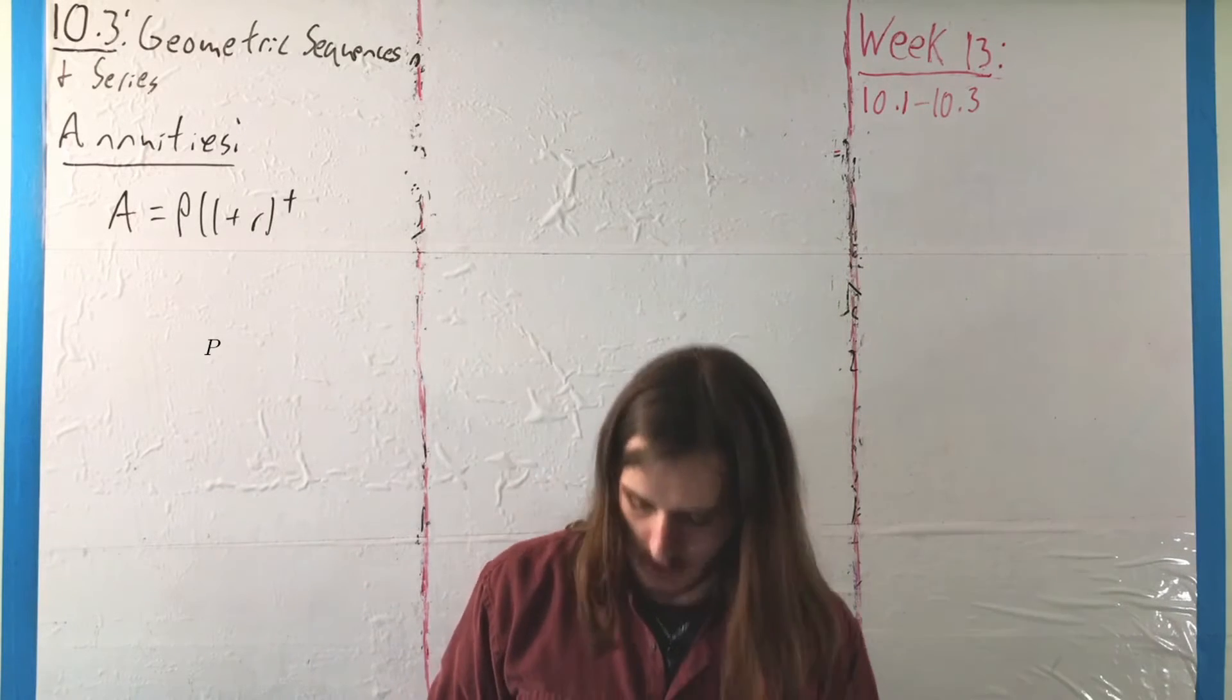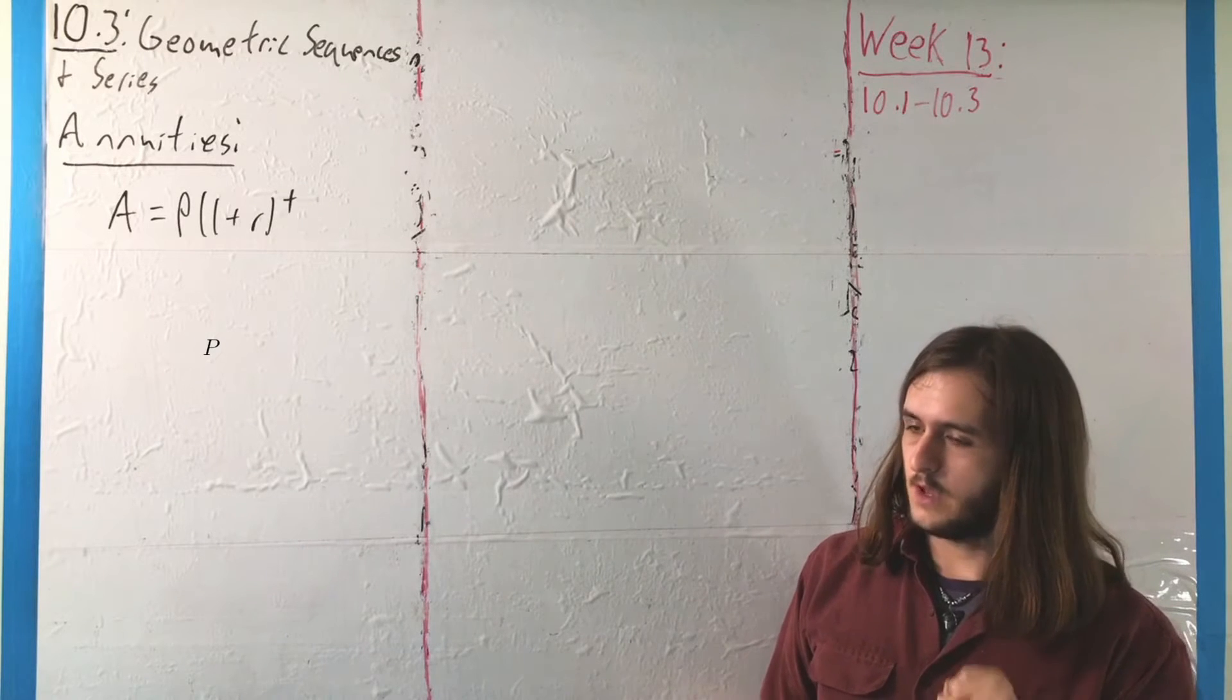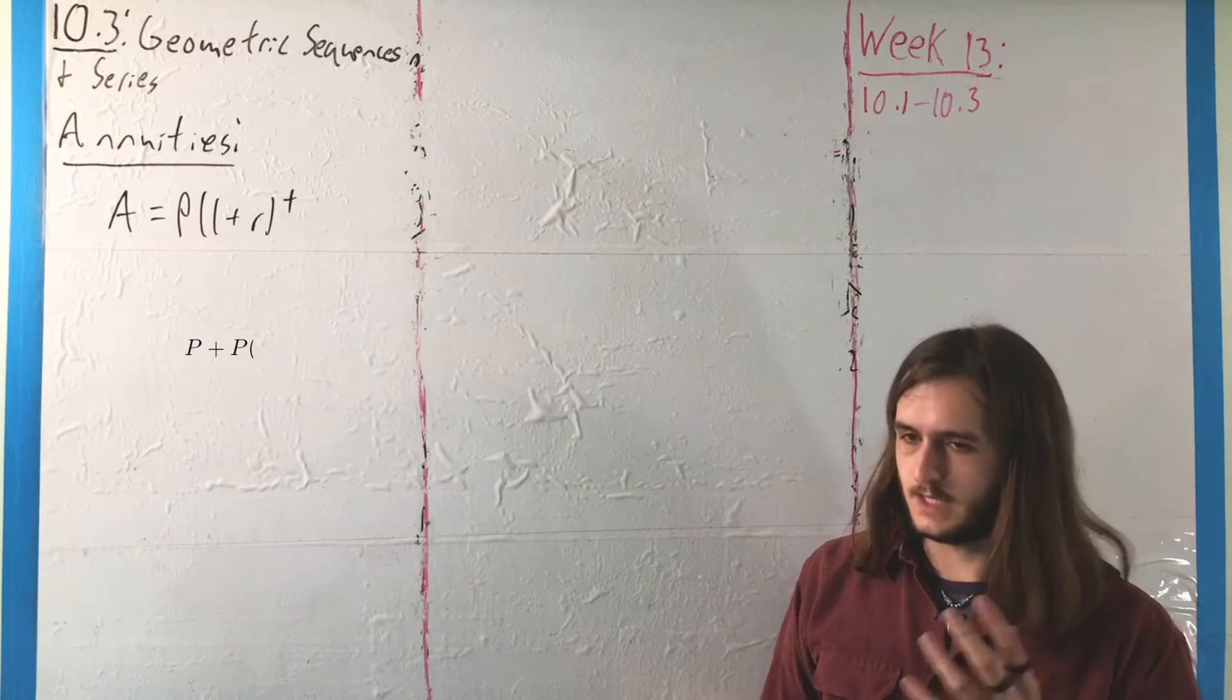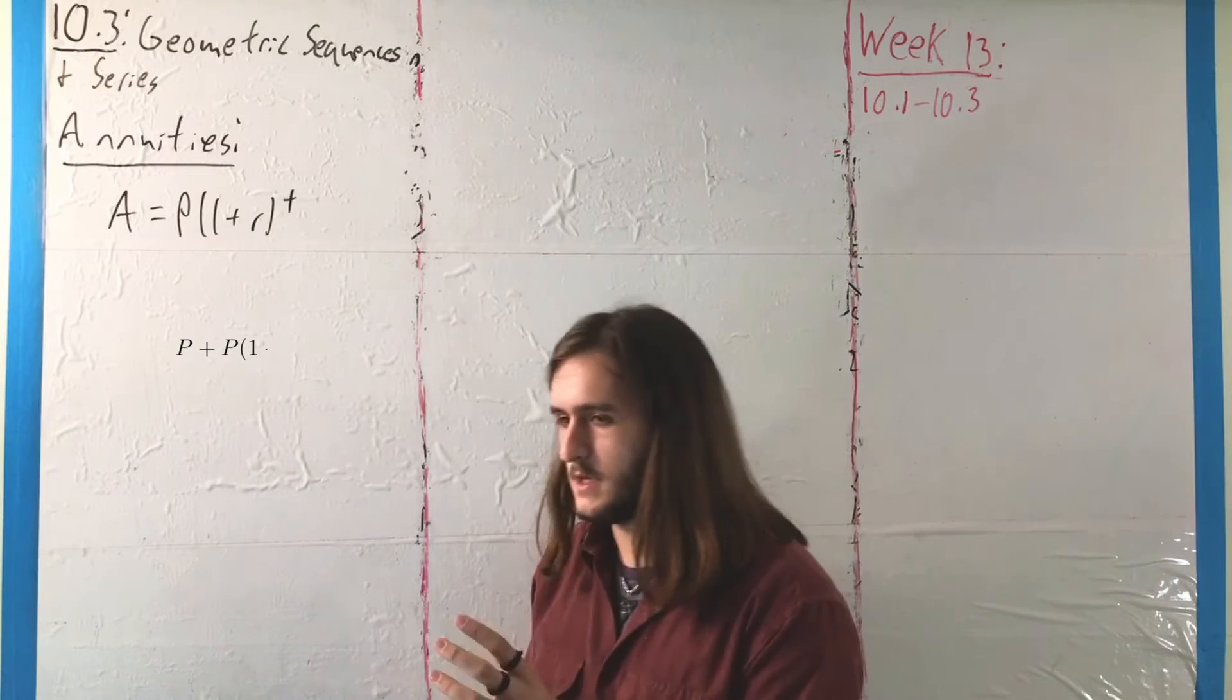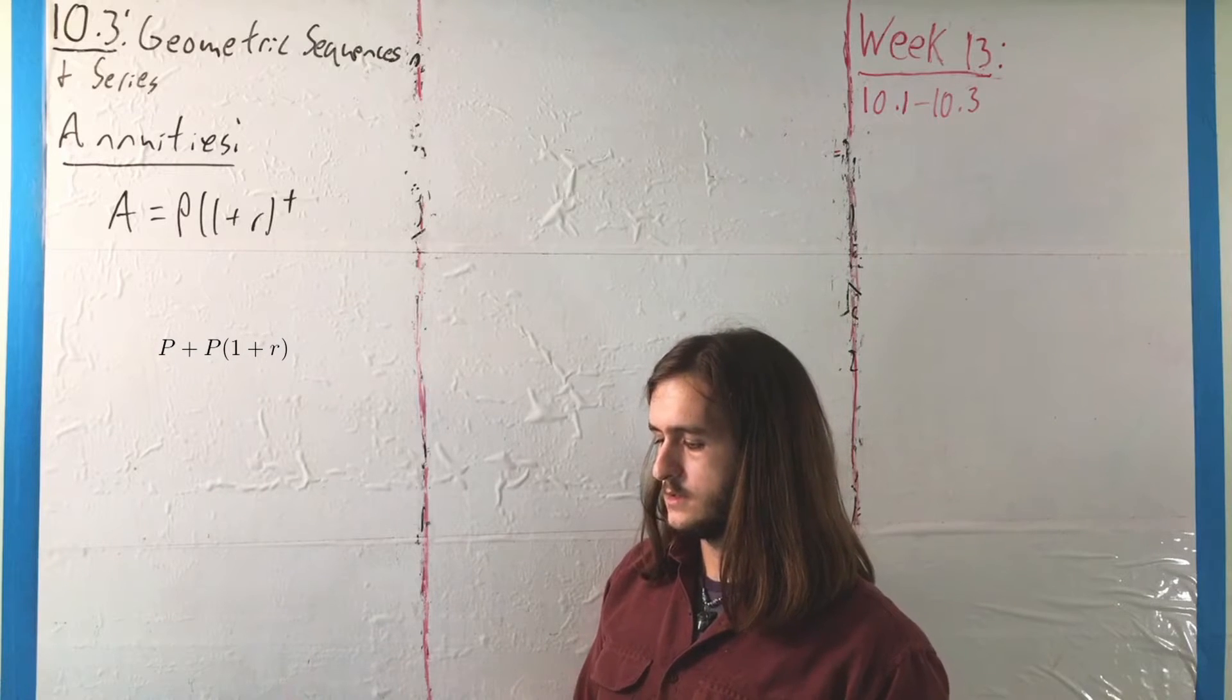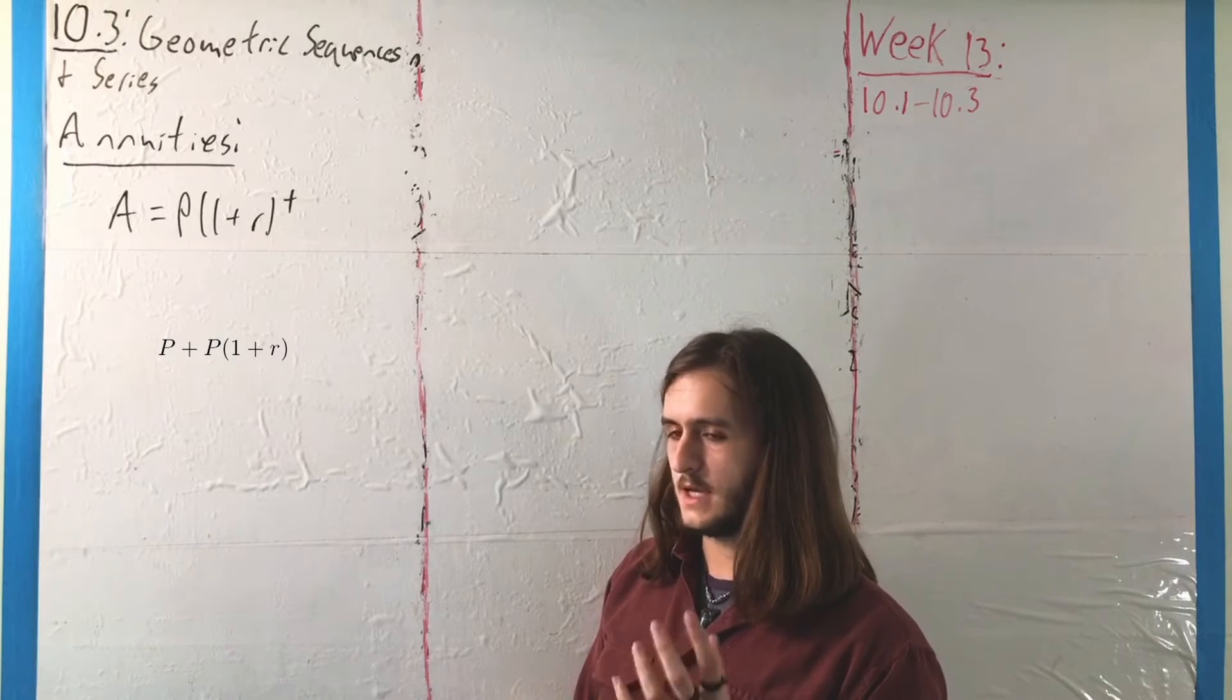Where after one year, yeah, we're just going to have that value P, plus the investment we get from that value P in terms of the interest. So P times 1 plus R.